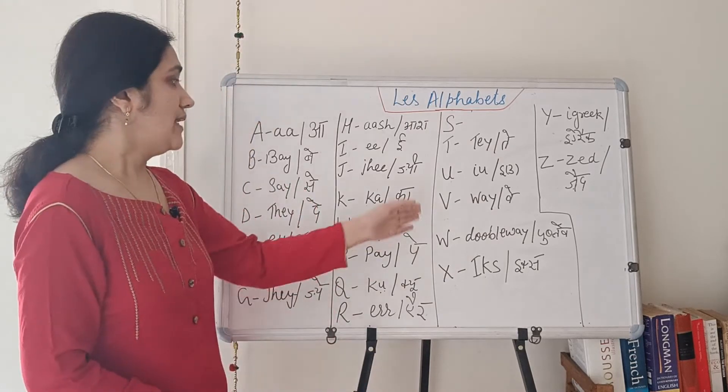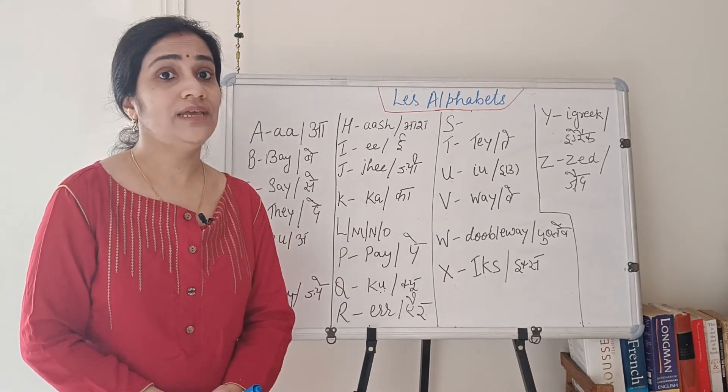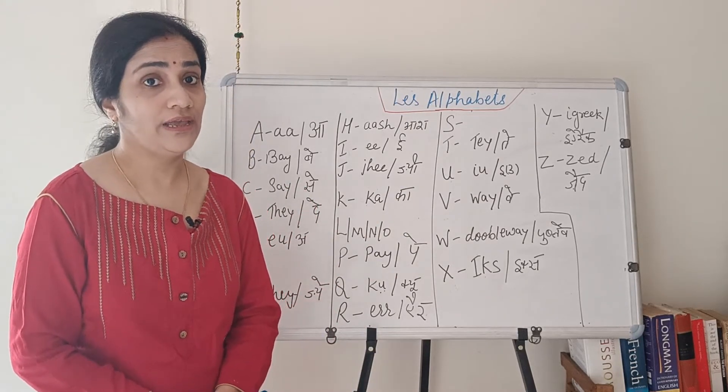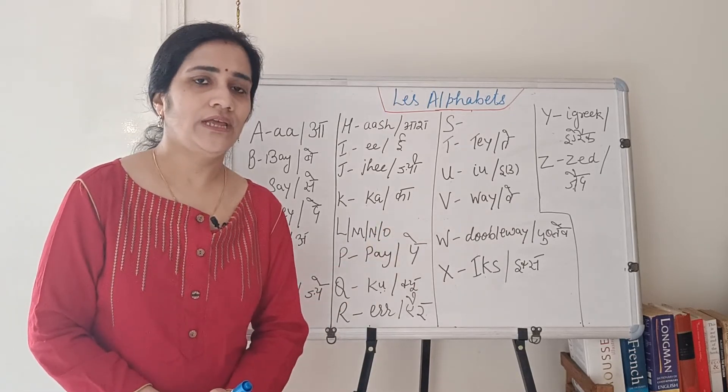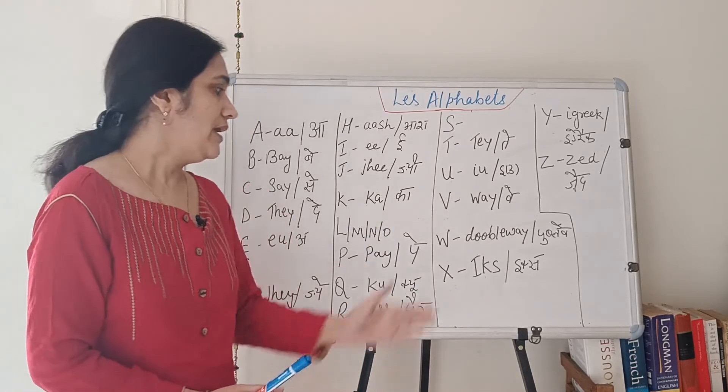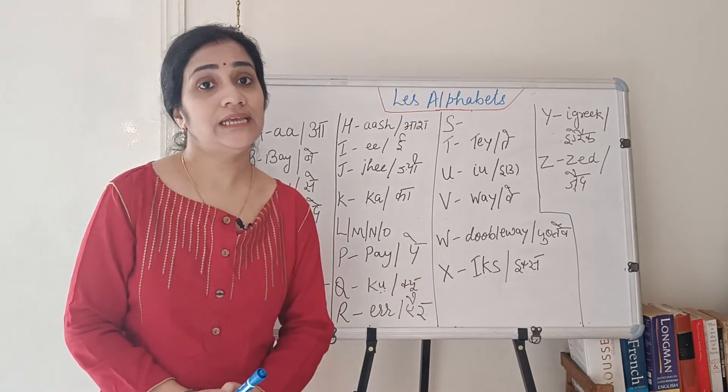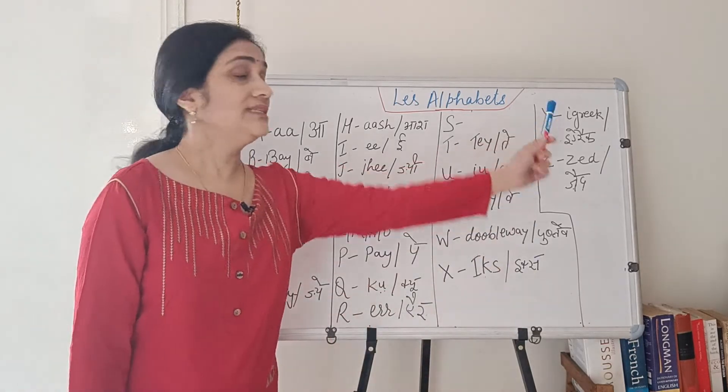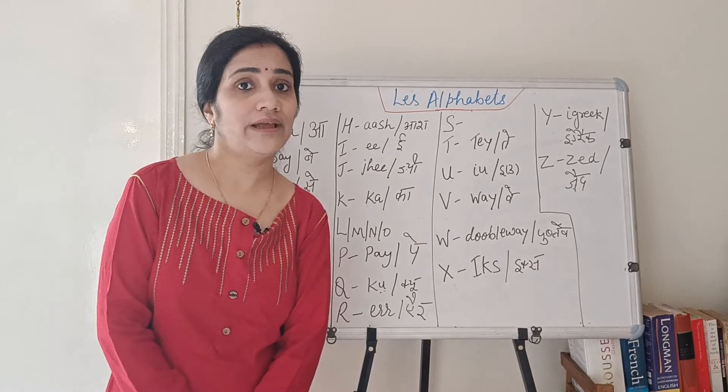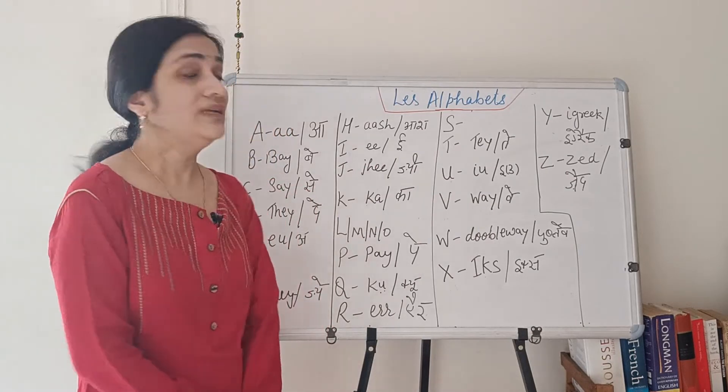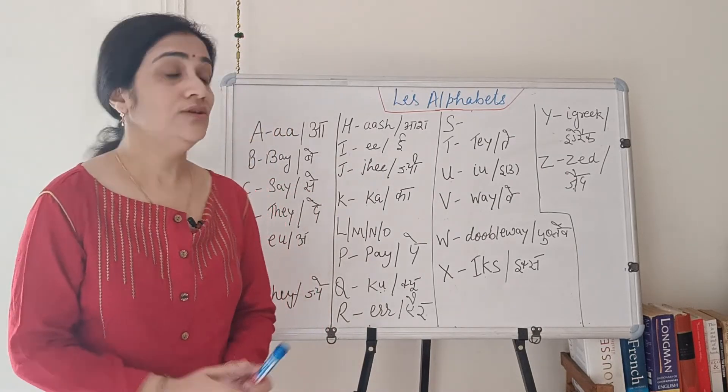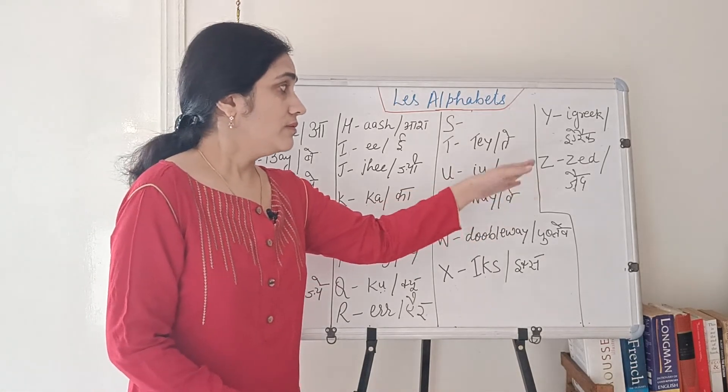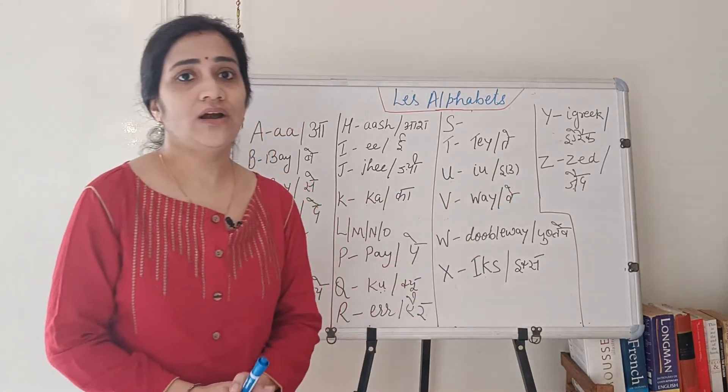Now the next letter is V. V is V. W sound W. X sound X. Y sound Y. Z sound Z.